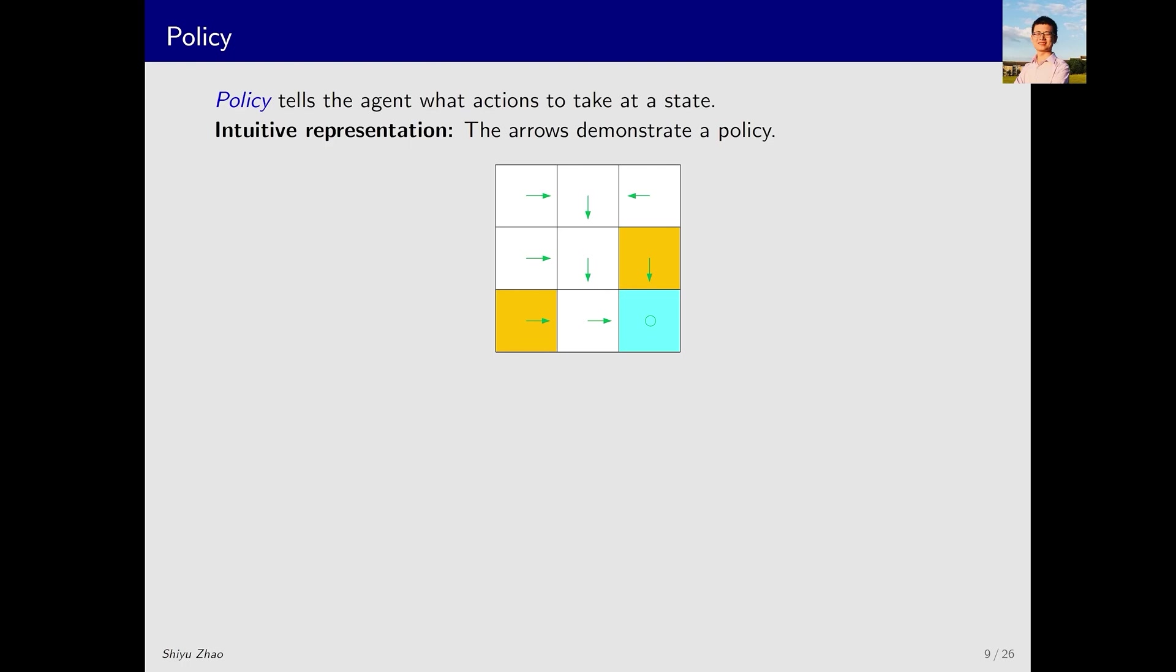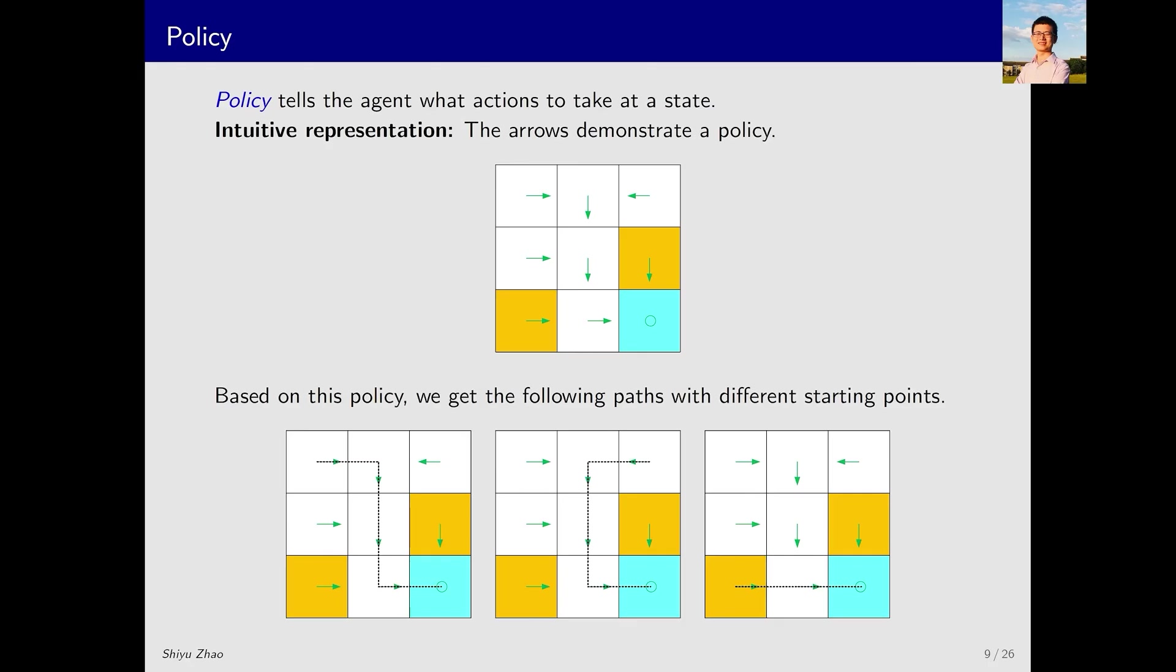Next, we will introduce a very important concept: Policy. This is a unique concept in reinforcement learning. A policy tells the agent what actions to take when in a given state. Intuitively, we represent a policy with arrows. As you can see here, there are 9 states. The policy for every state is indicated by an arrow. This is not an arrow, but a circle, indicating staying still without moving. Based on this policy, we can get some paths or trajectories, which we will explain in more detail later. For now, I give an intuitive demonstration.